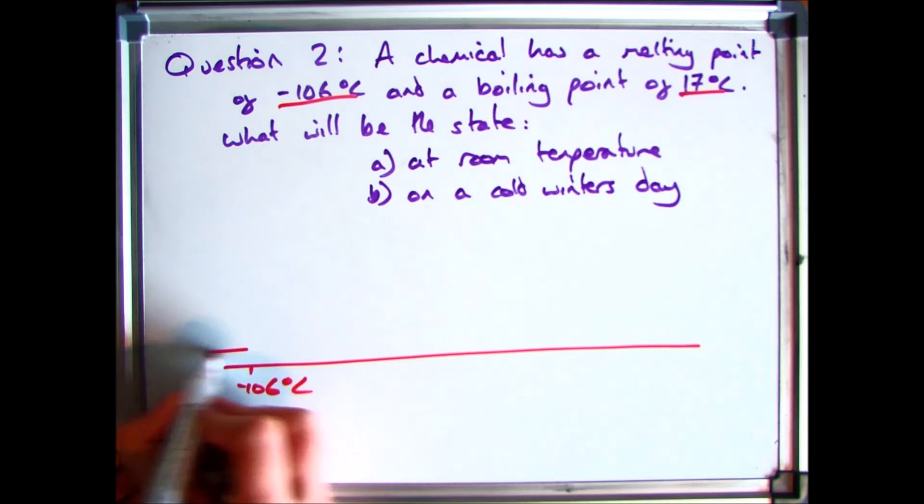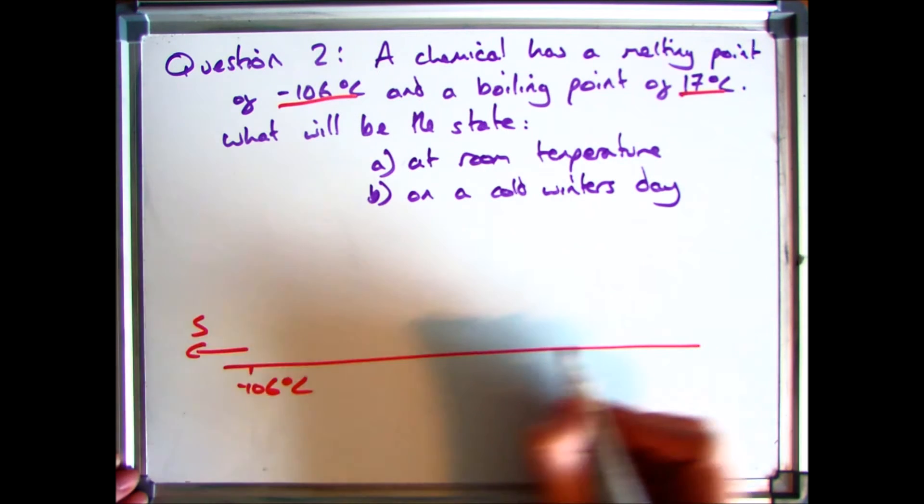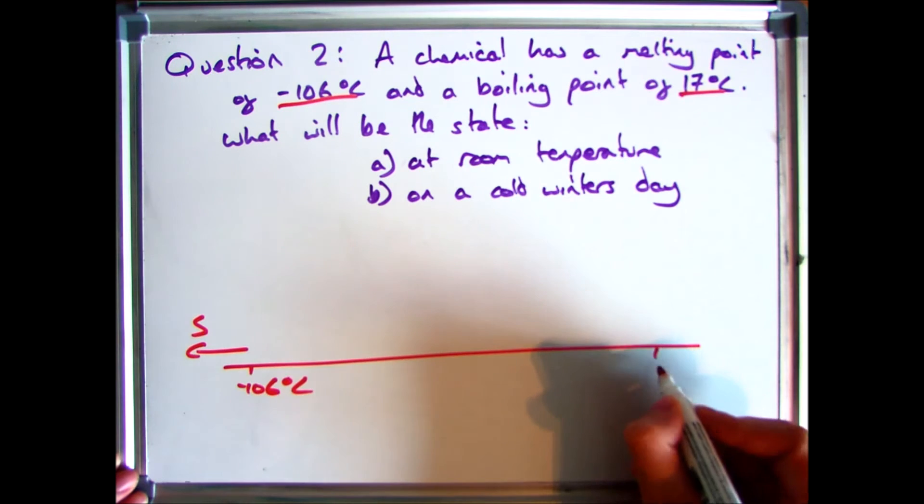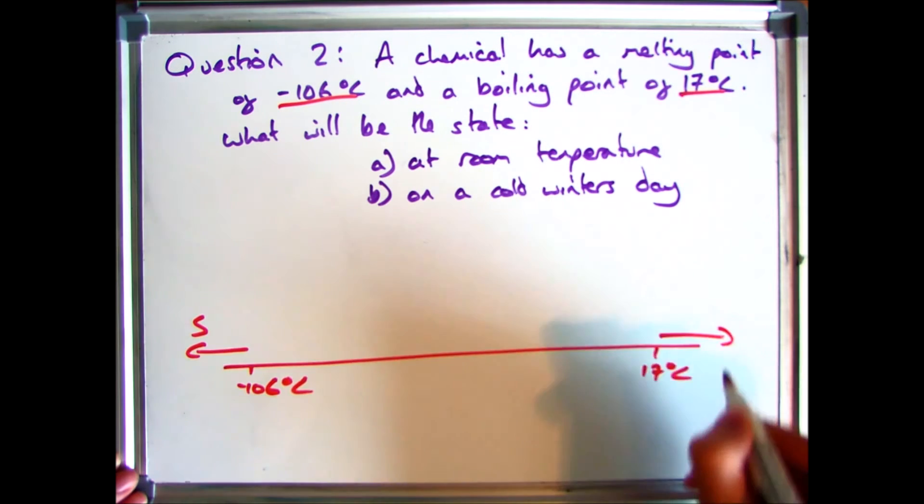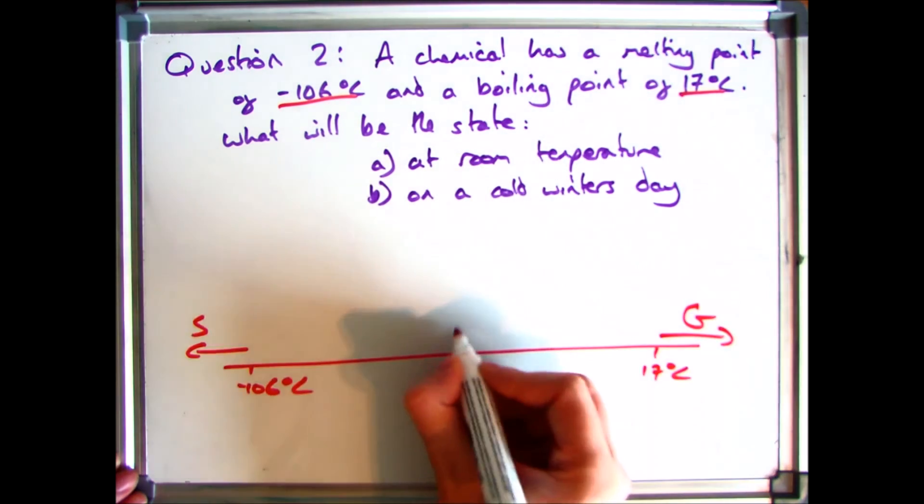Minus 106 degrees C. Everything to the left of that is a solid. And then 17 degrees C. Everything above that is a gas. So in the middle you have your liquid.